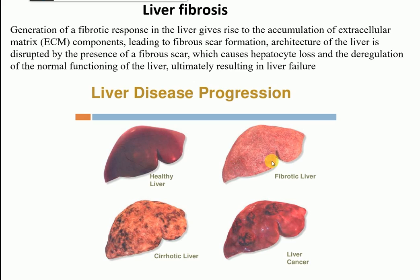The disruption of liver architecture causes hepatocyte loss - there will be loss of hepatocytes - and deregulation of the normal function of the liver, which ultimately results in liver failure. So liver fibrosis involves accumulation of extracellular matrix, formation of fibrous scar, disrupted liver architecture, loss of hepatocytes, and deregulation of normal liver functioning.